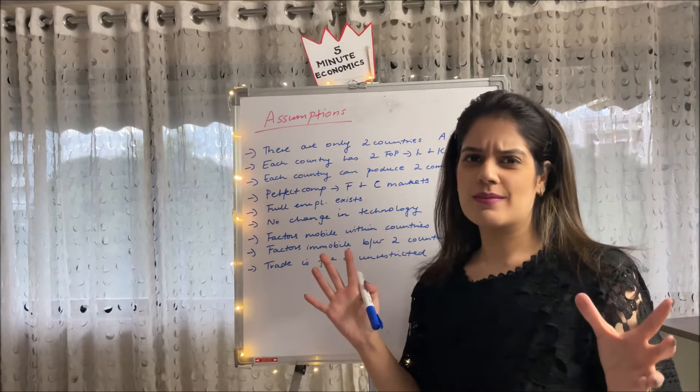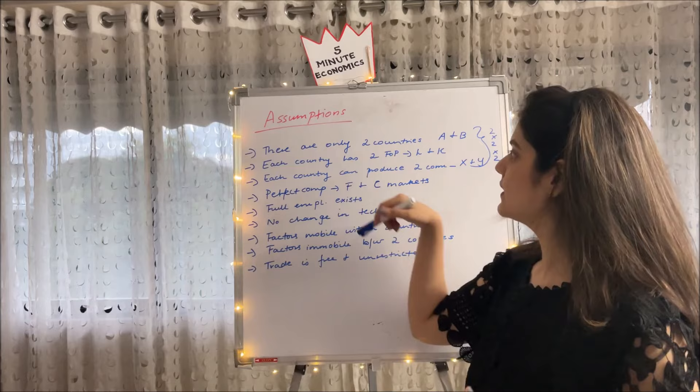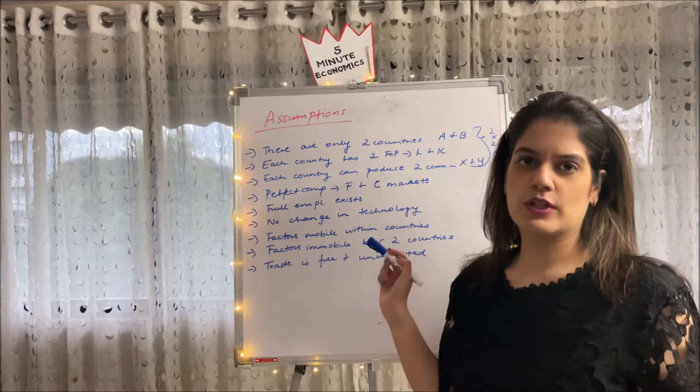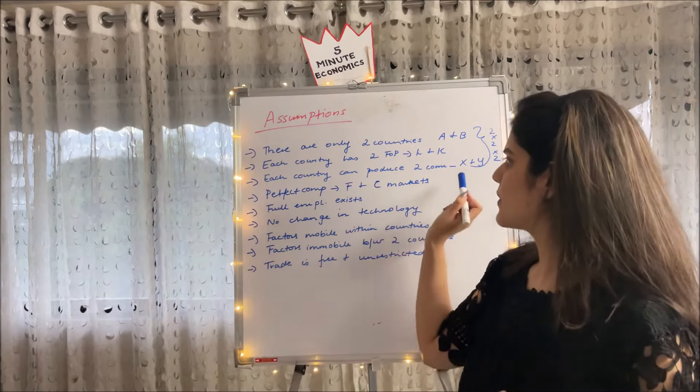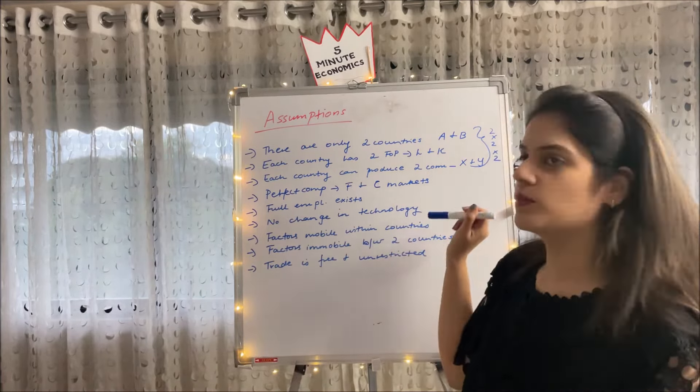So guys, there are quite a lot of assumptions under this theory. Let us quickly run through them. Number one, there are only two countries in our assumption. Each country has two factors of production, labor and capital. Each country can produce two commodities, say X and Y. So basically it's a two by two by two model.